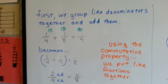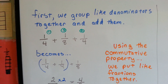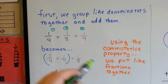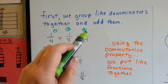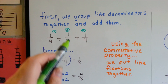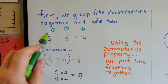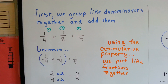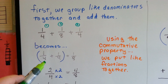So if we had 1 fourth plus 1 eighth plus 1 fourth, we could use the commutative property to put like fractions together. This would be the first one, this would be the second, and then this would be the third. The commutative property says it doesn't matter what order you do it in because it all comes out in the end. So we're going to group like denominators together and add them.